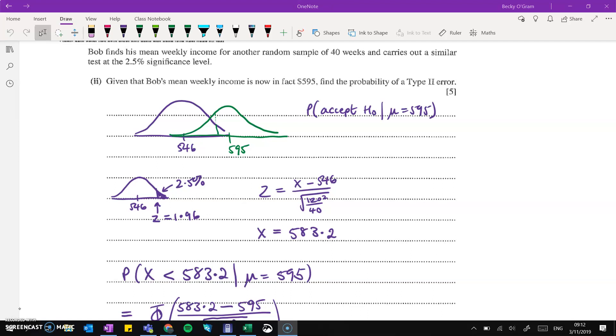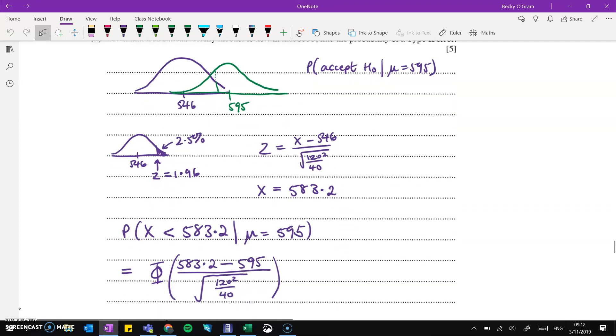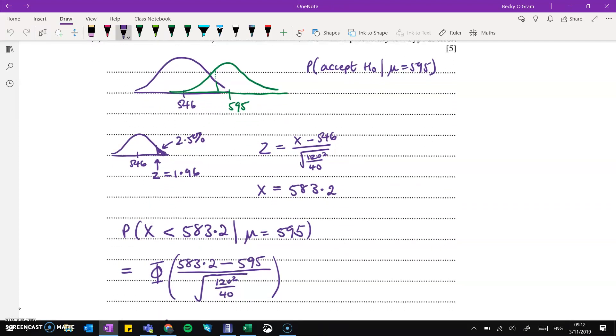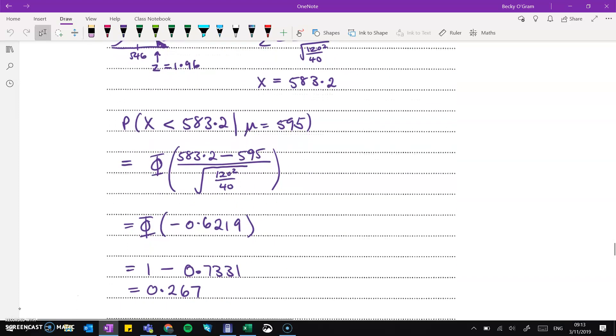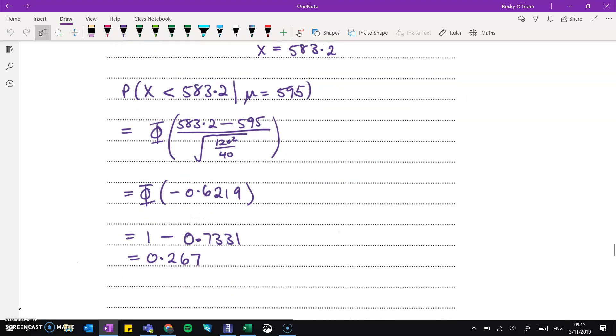So what is the probability that we get something that's less than 583.2, meaning that we would have accepted the null hypothesis when actually the mean was 595. So now we work out the probability of getting that value on the green distribution. So that's the working out here. And that comes to 0.267. So that is the probability of our type 2 error.